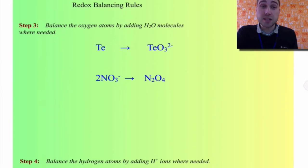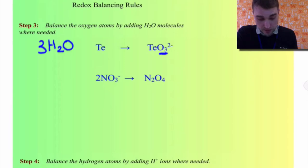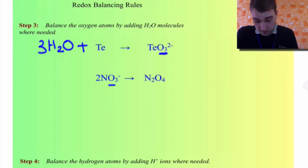The next step is to balance for oxygen by adding water molecules where required. In the first equation, we've got three oxygens on the right-hand side, so we need to add three water molecules to the left-hand side. In the bottom equation, we've got 2 × 3 = six oxygens on the left and only four on the right, so we need to add two water molecules on the right.